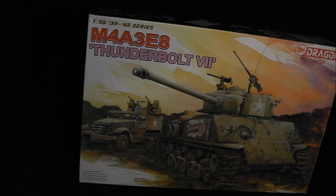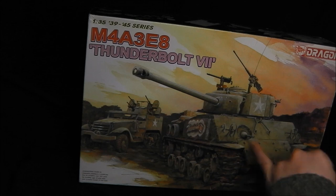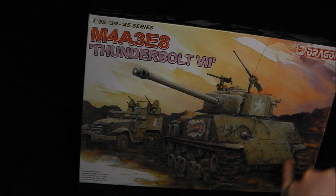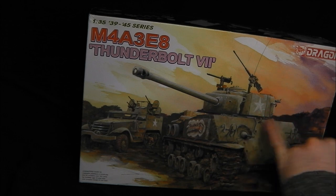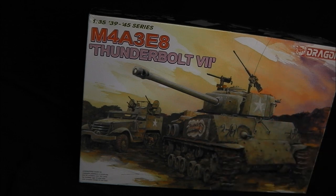So this kit is an M4A3E8, with HVSS suspension, as well as some very interesting applique armor. As you can see here, it's got some welded-on plates, which I actually believe is the front glacis plate from another Sherman, that they've literally bolted on to the front of theirs, as well as some added turret and side armor.